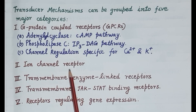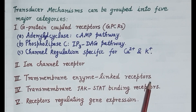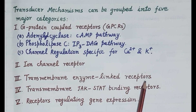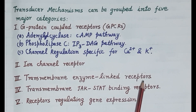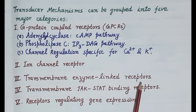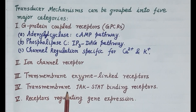The third type of transducer mechanism is transmembrane enzyme-linked receptors. Here, the receptor possesses an enzyme — generally a protein kinase — on its intracellular surface, and the response is produced when the ligand binds. For example, insulin and epidermal growth factor produce their action by binding to transmembrane enzyme-linked receptors where the enzyme is tyrosine kinase.